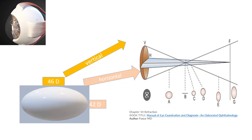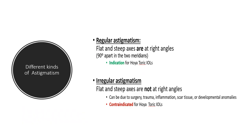In astigmatism the cornea is shaped like a rugby ball. For example, the vertical meridian may be around 46 diopters — steeper than the average — while the horizontal meridian is 42 diopters, flatter than average. Rays passing through the vertical meridian fall before the retina, and rays through the horizontal meridian fall behind it. This creates Sturm's conoid, and wherever the rays of light fall, the patient sees a blur circle.